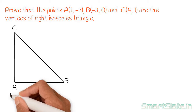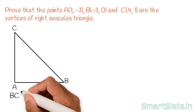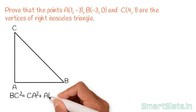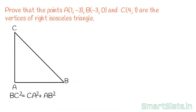And if the square of the longest side is equal to the addition of the squares of the other two sides, then the triangle is a right-angled triangle according to the Pythagorean theorem. We will calculate distances AB, BC, and CA using the distance formula.